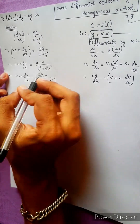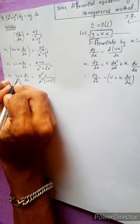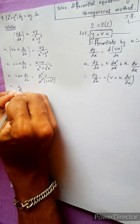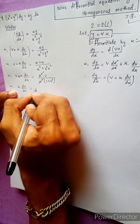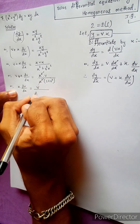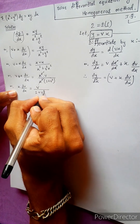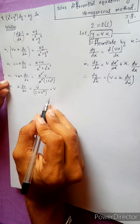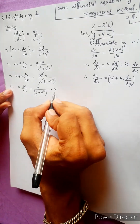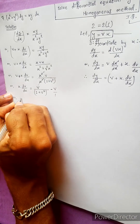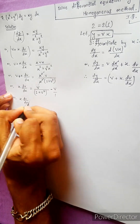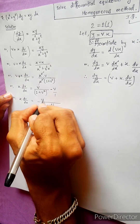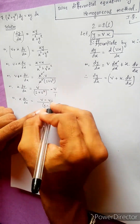x squared plus y squared over x squared equals to x squared into... one plus v squared. So dv/dx equals to v divided by one plus v squared, one plus v squared — v minus v simple, plus minus. Divide by 1, so x·dv/dx equals to...